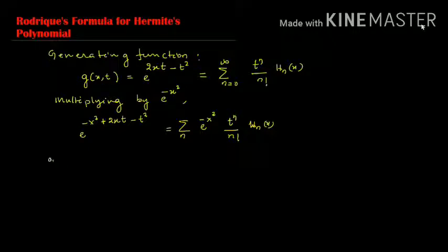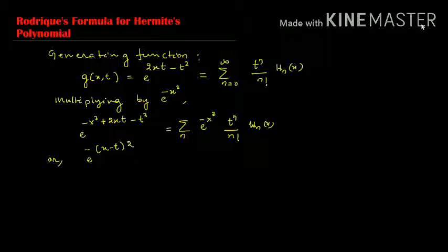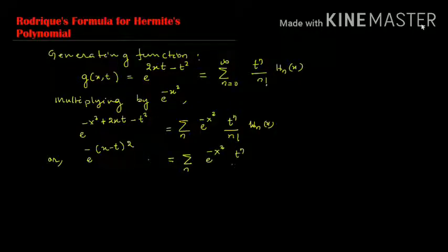This implies e^(-(x-t)²), because taking out the minus sign from the bracket gives x² - 2xt + t², which is (x-t)². So this equals the summation over n of e^(-x²) times t^n divided by n! times Hn(x).